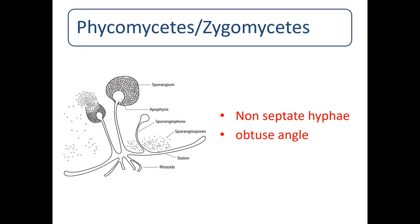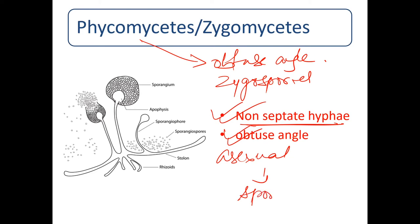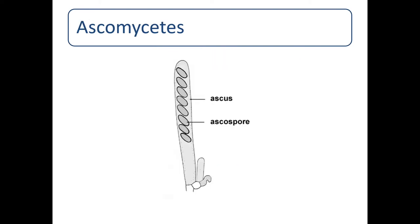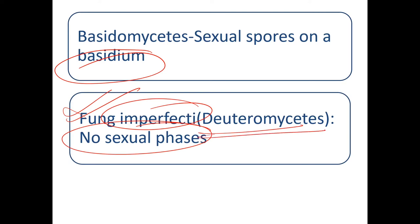Phycomycetes has non-septate hypha and obtuse angle branching. Sexual spores are zygospores; asexual spores are sporangia. Ascomycetes have ascospores inside an ascus. Basidiomycetes have sexual spores on a basidium. Fungi Imperfecta (Deuteromycetes) has no sexual phase spores.